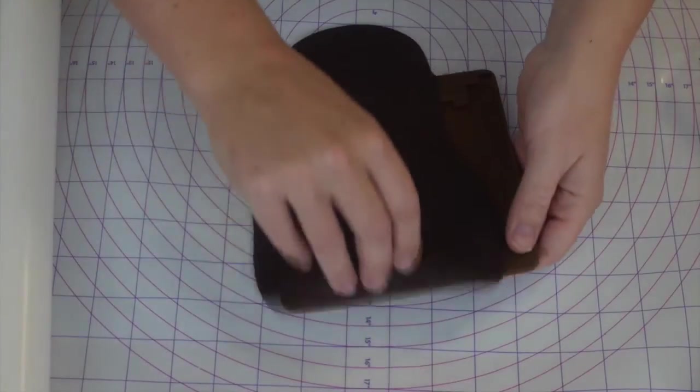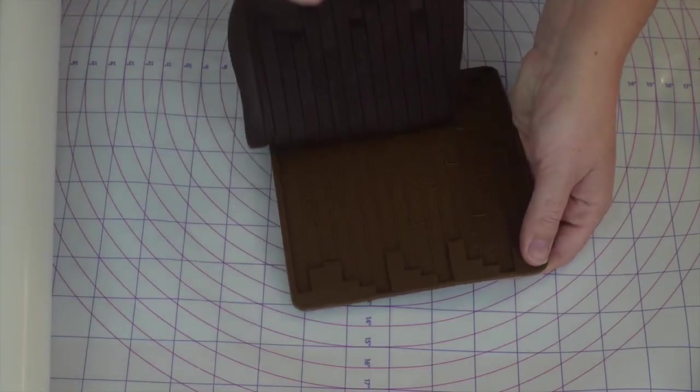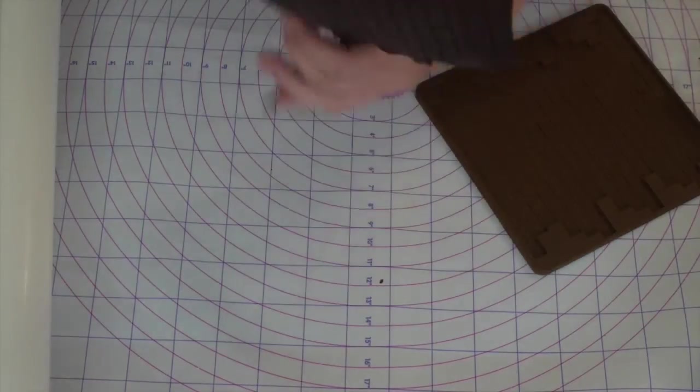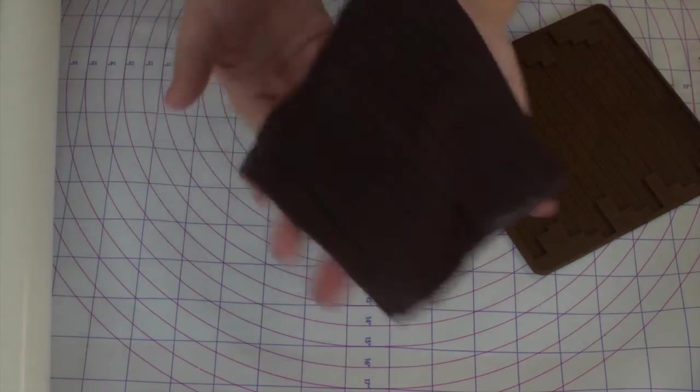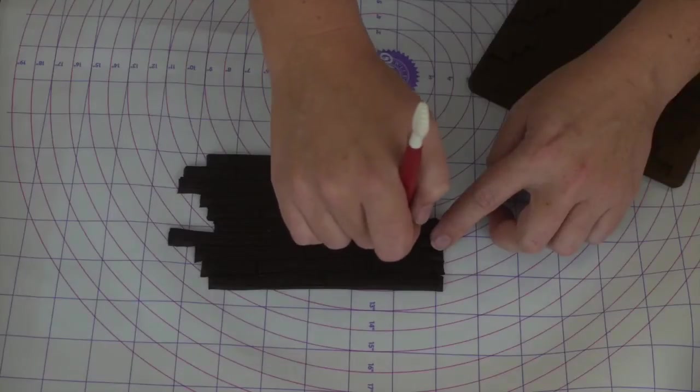And you will see in a minute when I lift that off just how well the texture mat comes off. Now I don't actually put anything on my texture mat. It comes off nice and clean. You don't need to grease it or flour it or anything like that. They just slide right off again and we get this lovely wood grain effect.